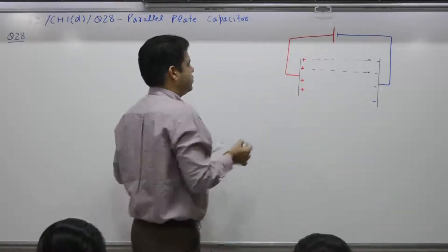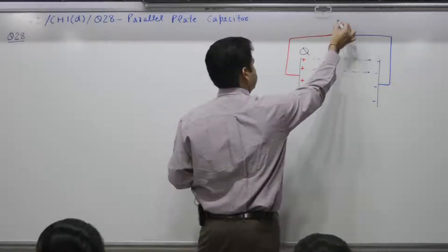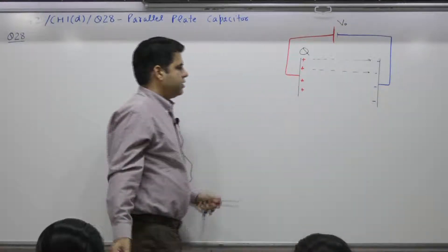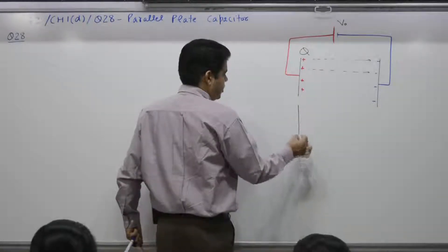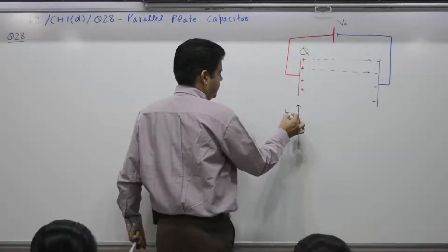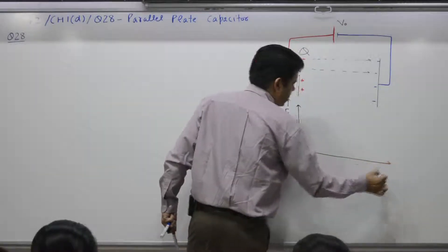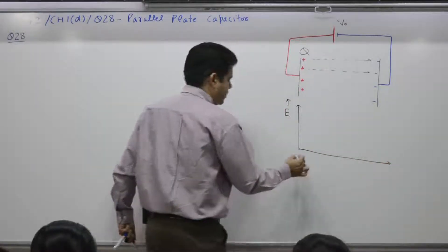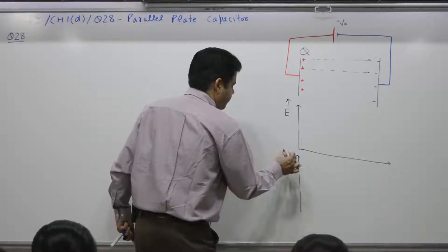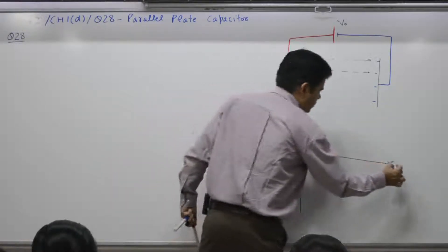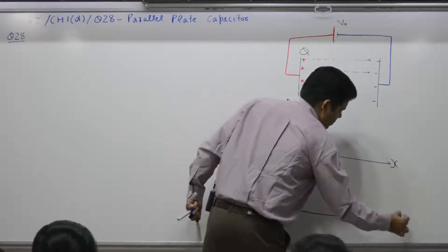Let the charge present be Q and the voltage applied be V naught. In all cases — parallel plate, spherical, cylindrical — we want to find out how the electric field varies with distance, and how potential varies with distance.